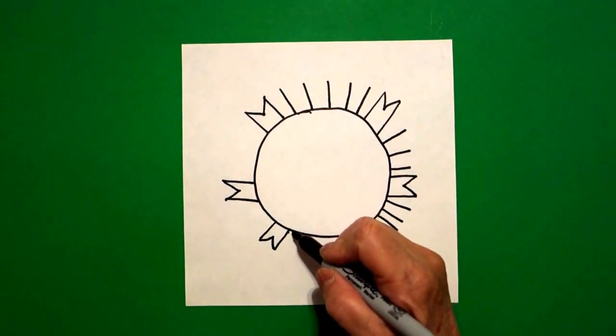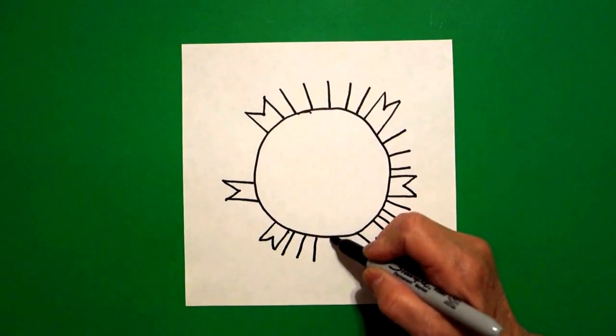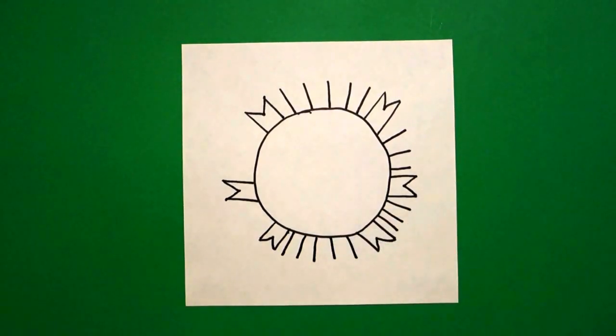Down at the bottom we're going to draw one, two, three, four, five straight lines.